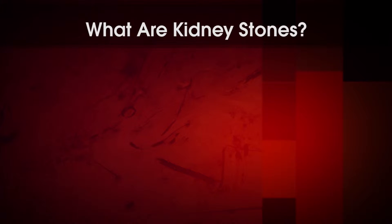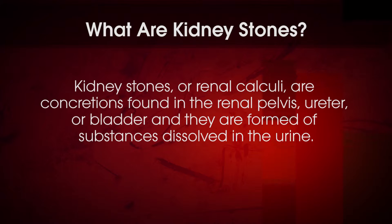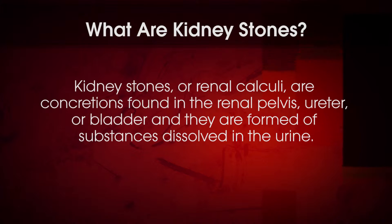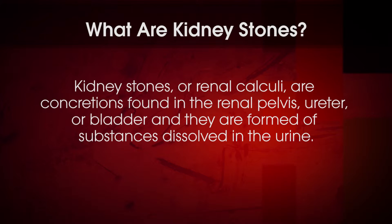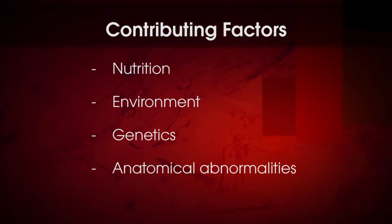In this presentation, I'll discuss laboratory testing for evaluation of renal calculi and assessment of stone risk — a measure of an individual's tendency to form kidney stones based on urine composition. Kidney stones, or renal calculi, are concretions found in the renal pelvis, ureter, or bladder, formed of substances dissolved in the urine at sufficient concentration to precipitate out of solution under certain conditions. Nutrition and environmental factors, as well as genetic and anatomical abnormalities, contribute to kidney stone formation.